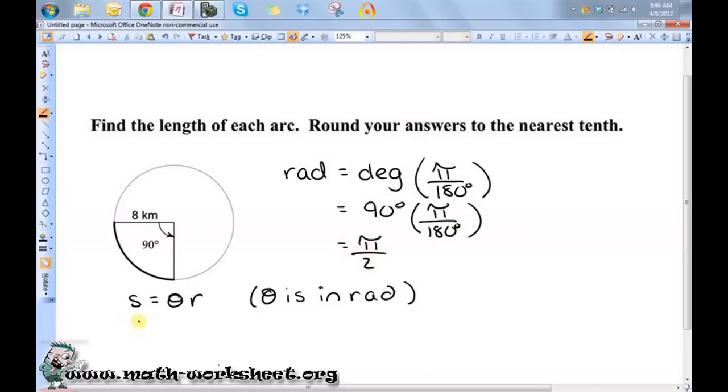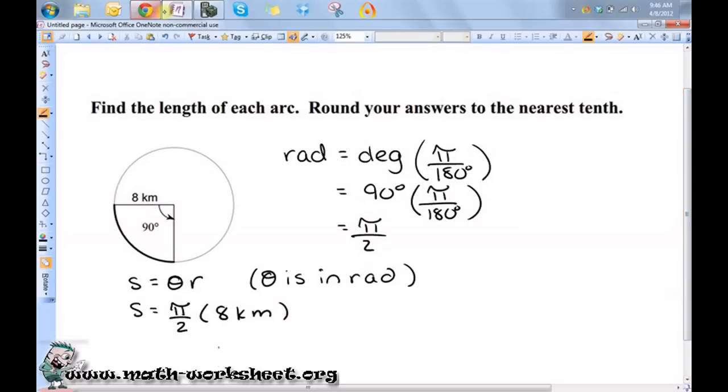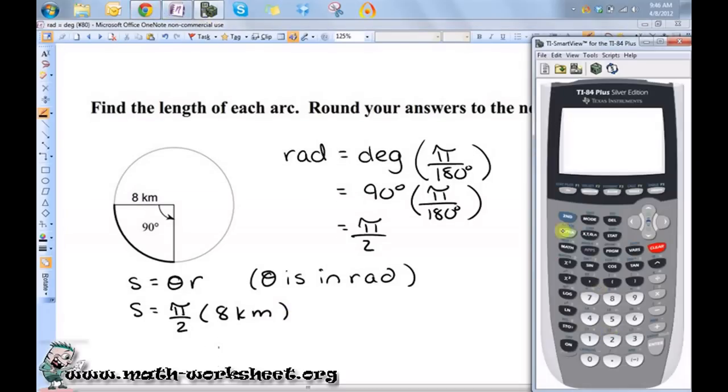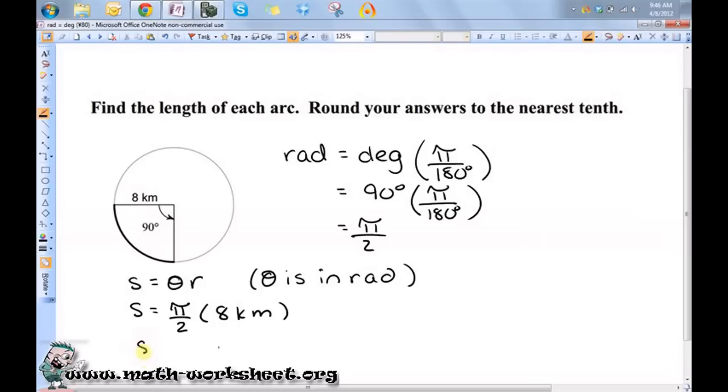That means S is equal to pi over 2 times 8 kilometers. So I just need to do pi over 2 times 8, approximately 12.6. So S is approximately 12.6 kilometers.